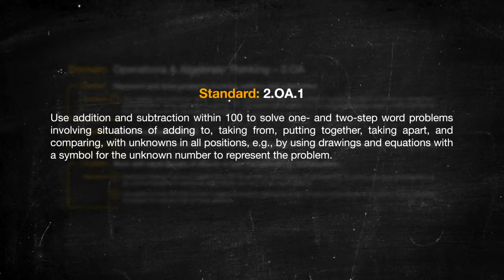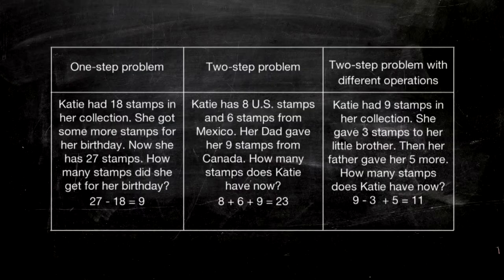Let's look at standard OA1. In first grade, students solve word problems using addition and subtraction within 20. Second graders work on one-step and two-step problems within 100. This table clearly shows the difference: a one-step problem requires only one computation, while two-step problems require two computations. Students' first experiences with two-step problems should be with single-digit addends, so the focus can be on creating the equations.